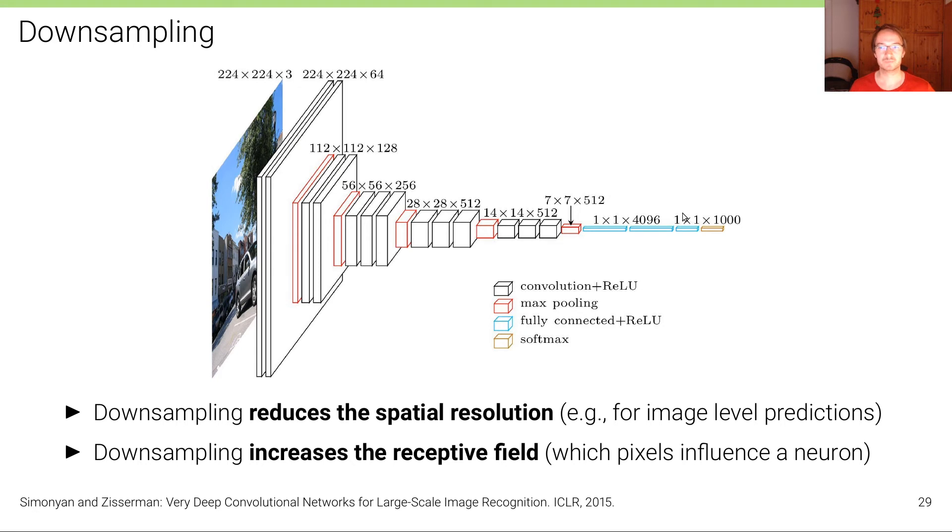In the end, here, these neurons are influenced by each single pixel in the image. While in the beginning, the first convolutional layers, only very local neighborhoods are influencing individual activations.